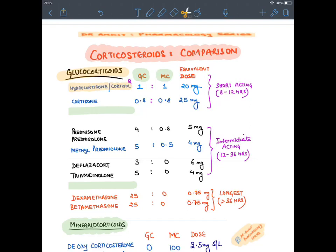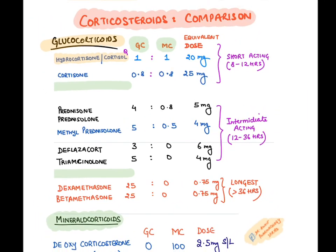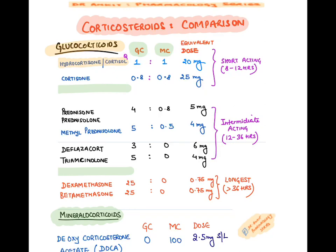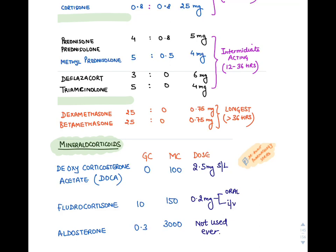As we go down the list, glucocorticoid activity keeps increasing: prednisone and prednisolone are four times more potent, methylprednisolone five times more potent. Deflazacort and triamcinolone are pure glucocorticoids with no mineralocorticoid activity; they are intermediate-acting. Dexamethasone and betamethasone are the most potent glucocorticoids with zero mineralocorticoid activity — pure glucocorticoids and the longest-acting agents.